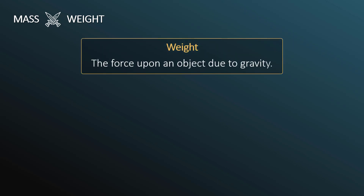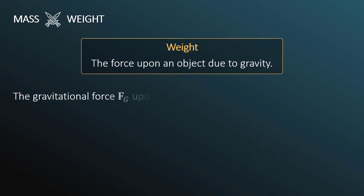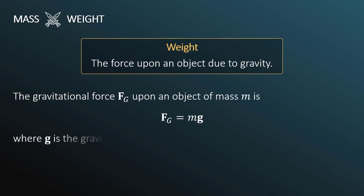Mass versus weight: it's important to make the distinction between these two terms. Weight is the force upon an object due to gravity, whereas mass is the measure of an object's inertia and the quantity of matter in an object. The gravitational force F-sub-g on an object of mass m is F-sub-g equals m times g, where g is the gravitational acceleration.